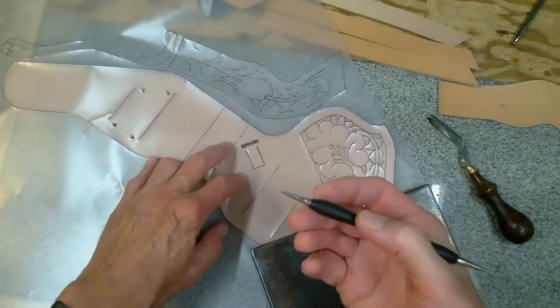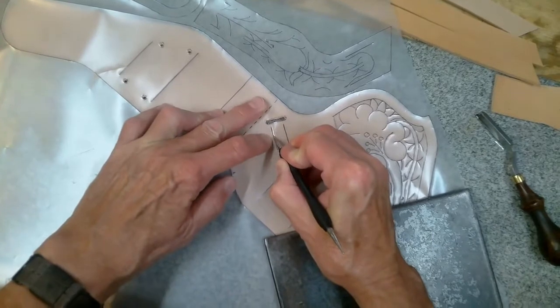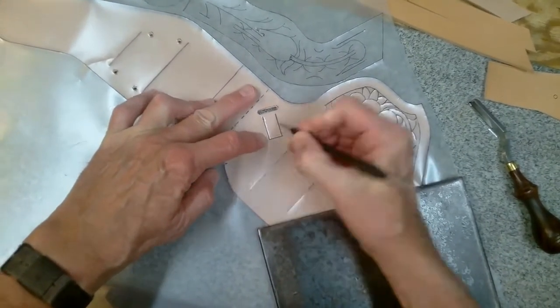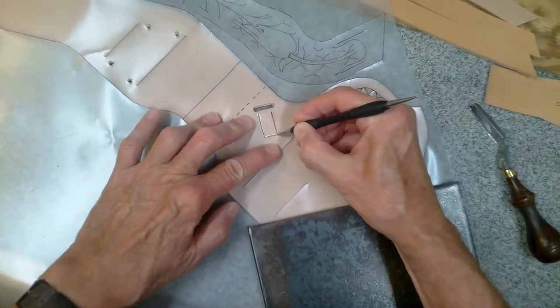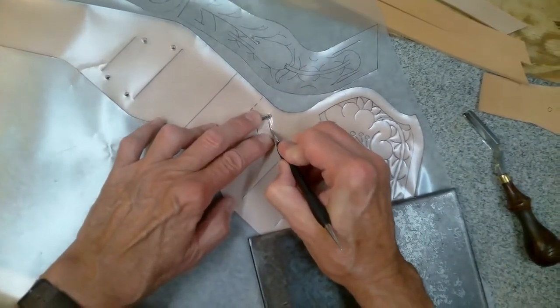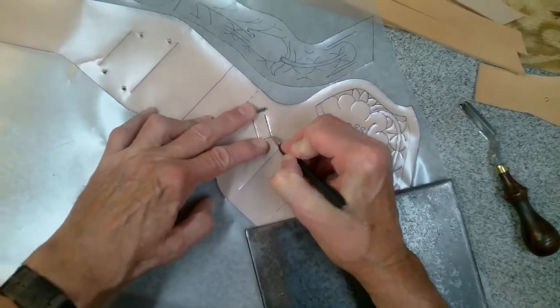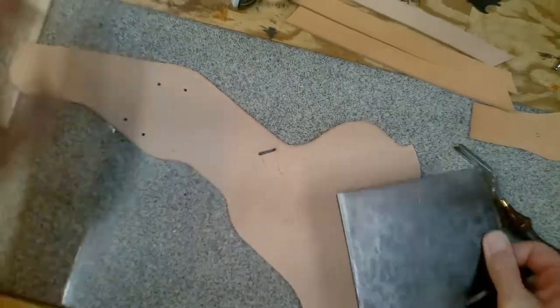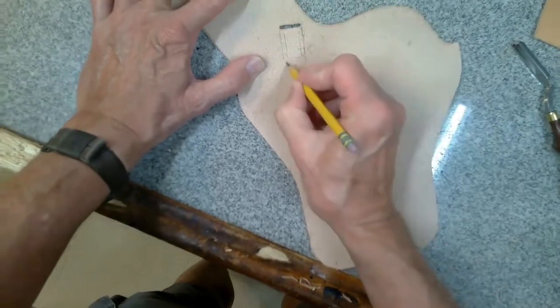My next step is to skive away the holster body where the thumb brake safety strap will be sewn into the holster pouch. To do this, I place the holster body flesh side up. Then I reverse the tracing film pattern and line up the safety strap slot in the holster body with the slot in the tracing film pattern. Then I trace the stitching lines onto the flesh side of the holster body. This serves as my guide for skiving away this portion of the holster body.